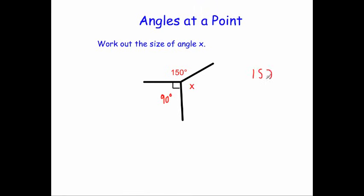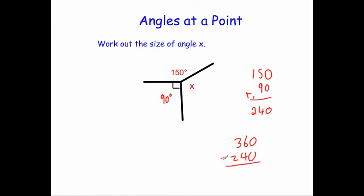So let's add 150 plus 90. 0 plus 0 is 0, 5 plus 9 is 14 — put the 4 down and carry the 1 — and 1 plus 1 is 2. So these two angles add up to 240. We know the whole thing's 360, so if we take 240 away from 360: 0 take away 0 is 0, 6 take away 4 is 2, and 3 take away 2 is 1. So X is 120 degrees.